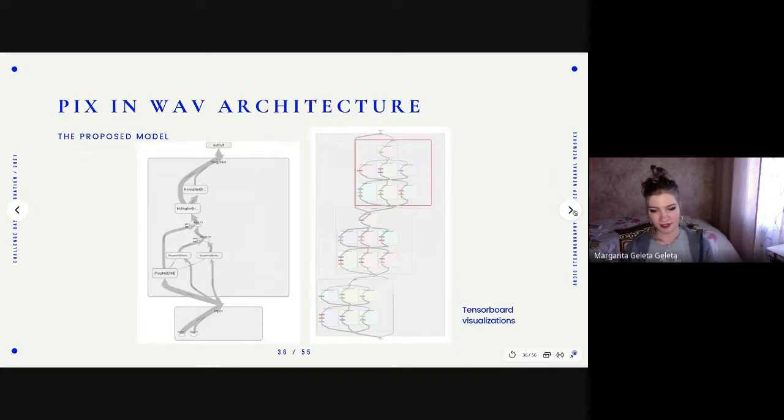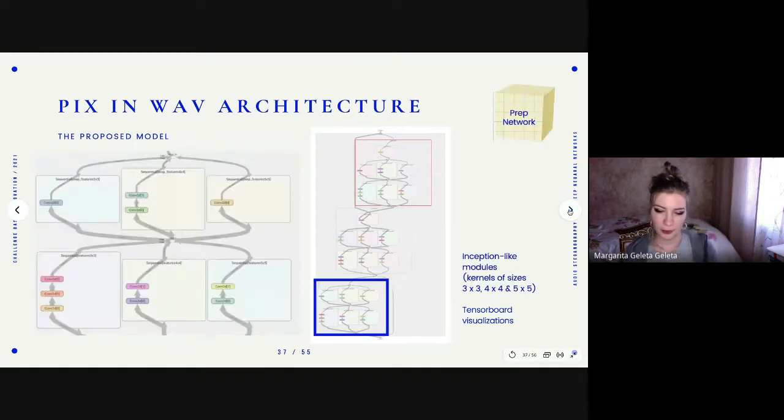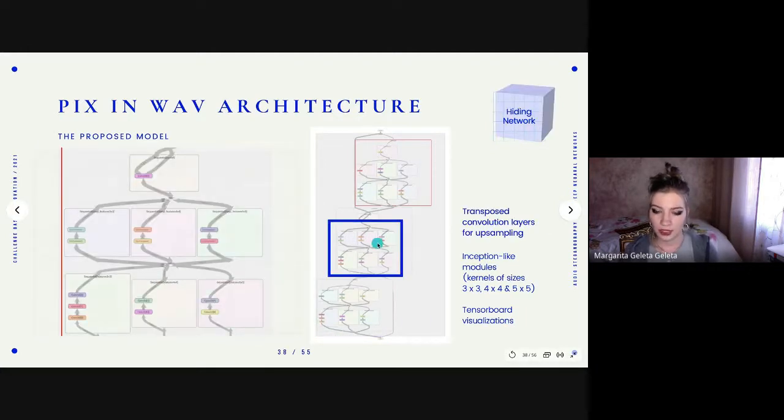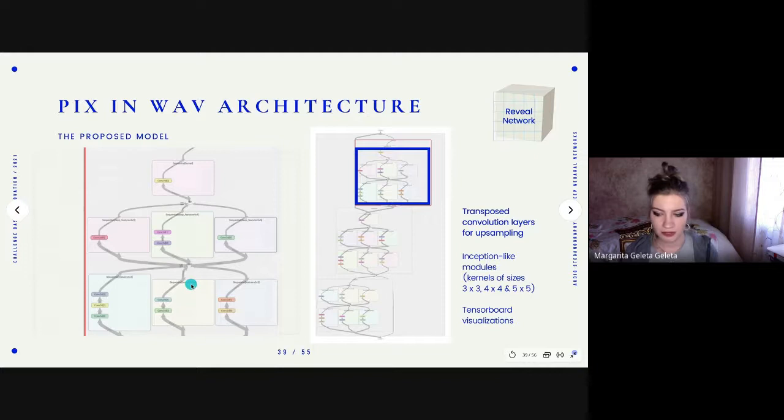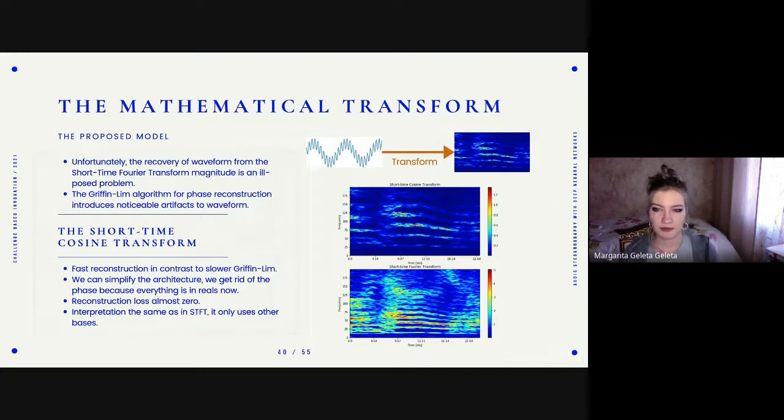And these are the visualizations I have done with TensorBoard. During this project, I have learned to use TensorBoard. And here we can see the whole architecture I have implemented of the network. And we will go part by part. We can see that at the beginning, we have the preprocessing network. All the network is done with inception-like modules. That is, we extract features of different kernel sizes, 3x3, 4x4, and 5x5. In the parts where we have to use subsampling, I have put transposed convolution layers and the same inception-like modules in the reveal network.